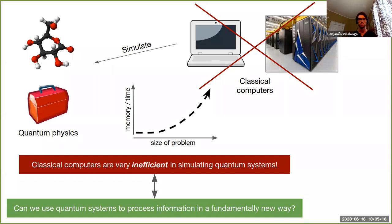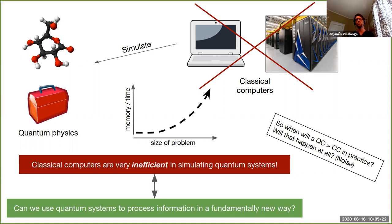The flip side is that we can ask whether we can build a computer that works in a fundamentally quantum way, taking advantage of this fundamentally different way of processing information to give us speedups that are outside our reach with classical machines. A natural question is: when will we have a demonstration that a quantum computer is really doing something a classical computer cannot do — and specifically, solving something outside the class of problems classical computers can solve in polynomial time?